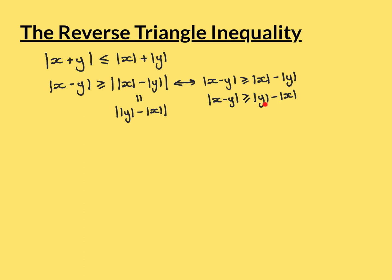So from the main triangle inequality, it implies that both of these two statements here are true. That's the forward arrow of this logical equivalence. Now what we want to do is go backwards and show that if these two things are true it implies the reverse triangle inequality is true, and then we'll have established that the two statements are equivalent.